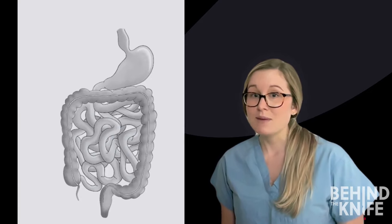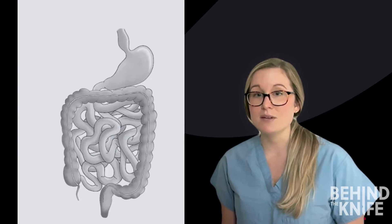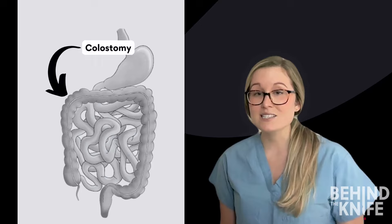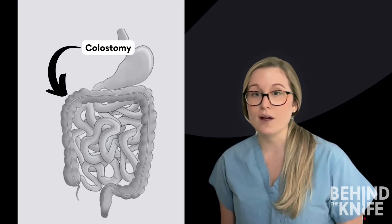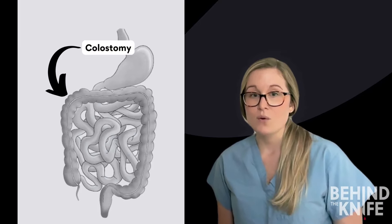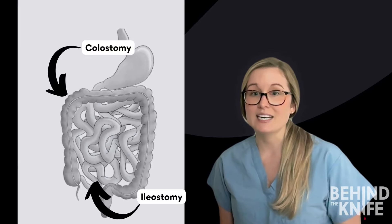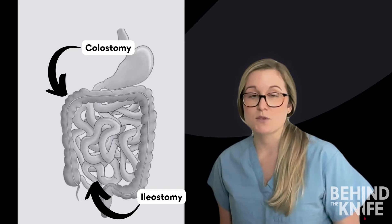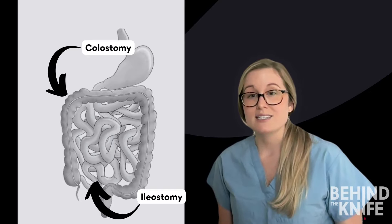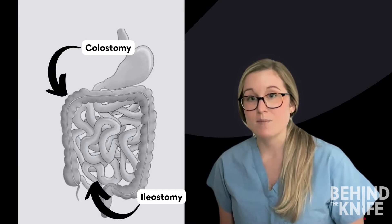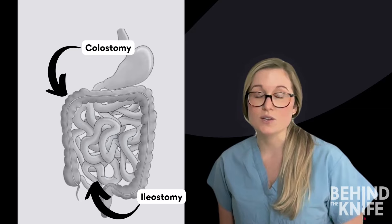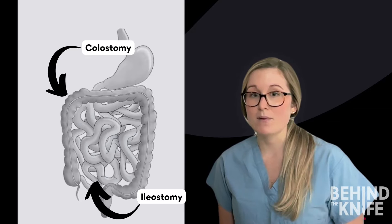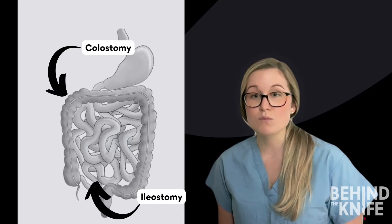When naming an ostomy, it is typically named after the organ it is created from. For example, an ostomy created from the colon is called a colostomy, whereas an ostomy created from the ileum is called an ileostomy. When attempting to tell the difference between the two, colostomies tend to have a larger diameter and many mucosal folds, whereas an ileostomy tends to be a little bit smaller in diameter and have a smooth mucosal surface.